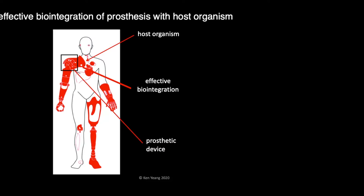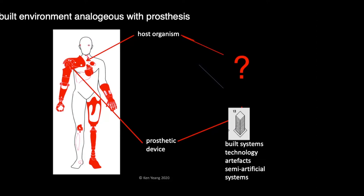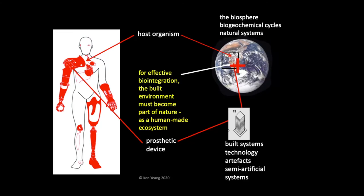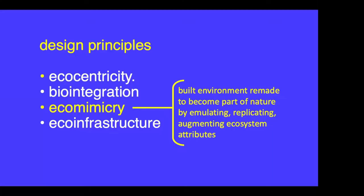If biointegration is not effective, either the prosthetic device breaks down or the host organism is hurt. By analogy, our built systems, our technology, our artifacts — they are our prosthetic devices. They are artificial, human-made, and synthetic. The question is: what is the equivalent host organism? It's very simple — the host organism equivalent is the biosphere itself. Everything depends on effective biointegration of our built systems with the biosphere as the host organism. If it's not effective, impairment to the environment happens.